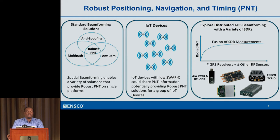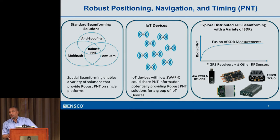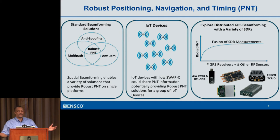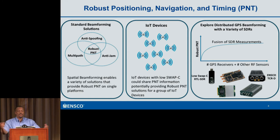From the beamforming solution space, spatial beamforming is a very nice way of dealing with jammers, multipath, and spoofers. There are publications on anti-spoofing — if you have at least two receivers you can determine if you're being spoofed by looking at carrier phase differences of the spoofer signal. With spatial beamforming, what if you have all these IoT devices that require low SWaP-C? If you want them to have low SWaP-C and also share PNT information, maybe they could share that information and come up with a more robust PNT solution.